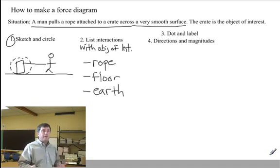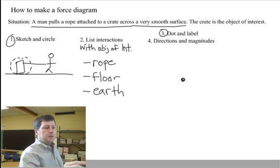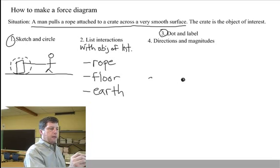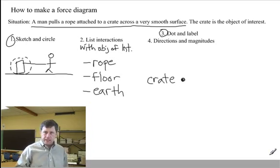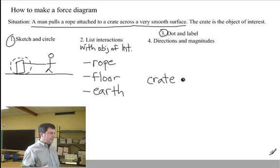Now, we're ready to make the actual force diagram. Step three. Dot and label. Dot. Label. The dot reminds us that in the force diagram, we are treating the object of interest as a point particle. The size and the shape and orientation of the crate is not important. And we're treating it as a simplified type of object.